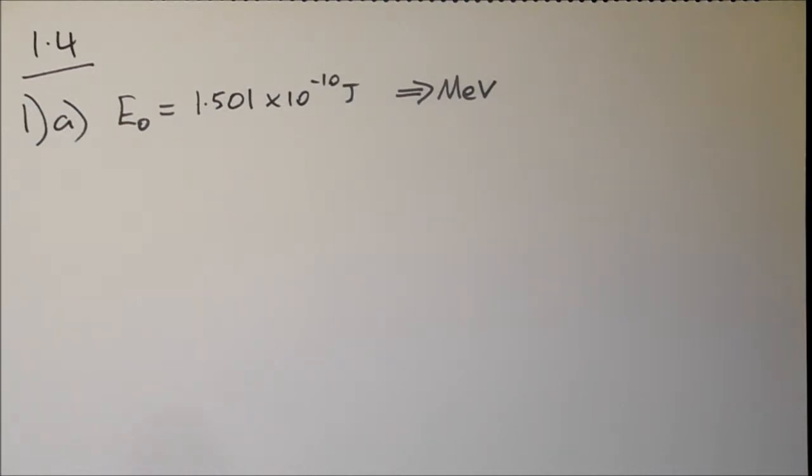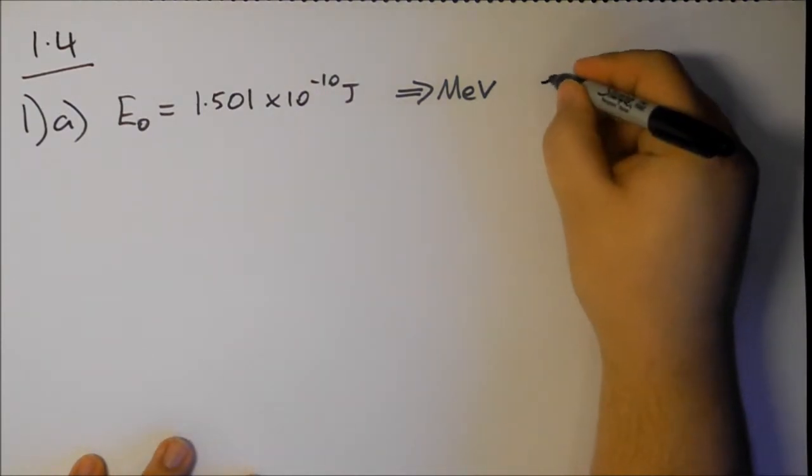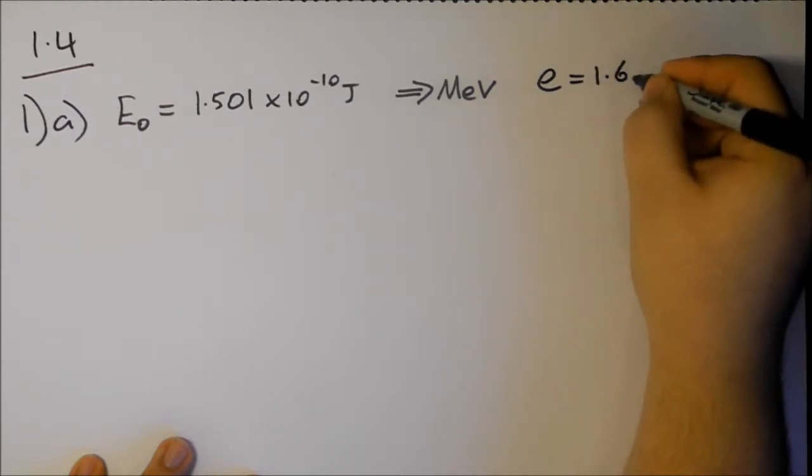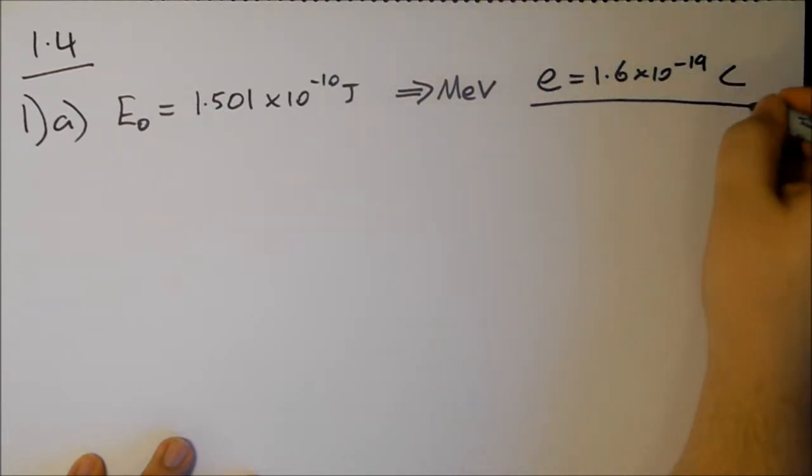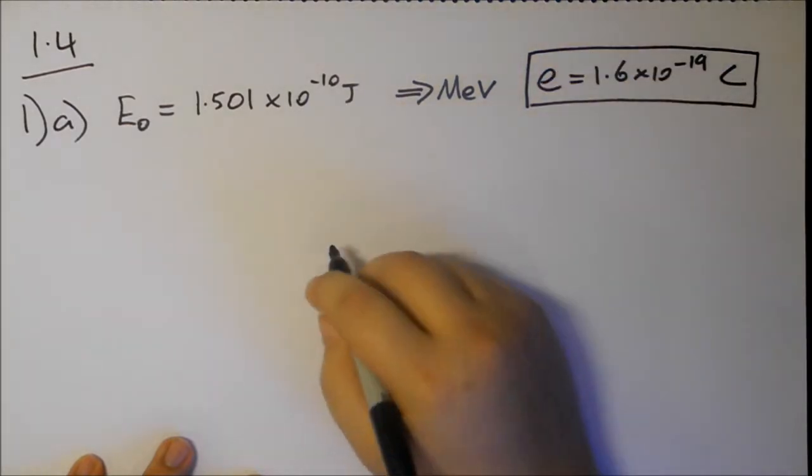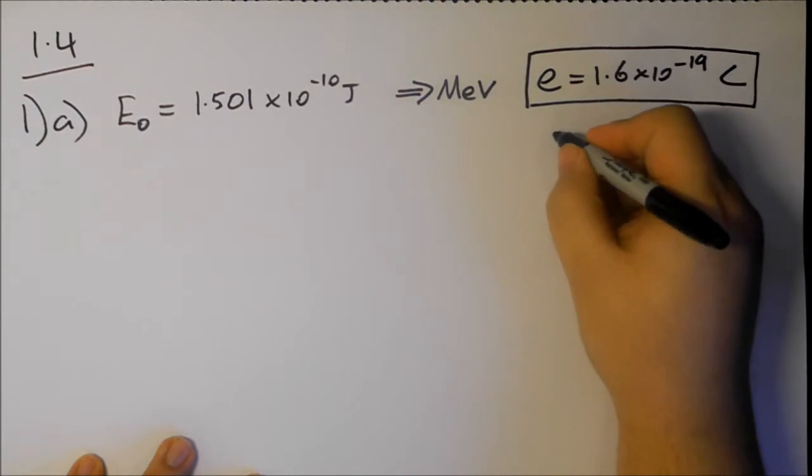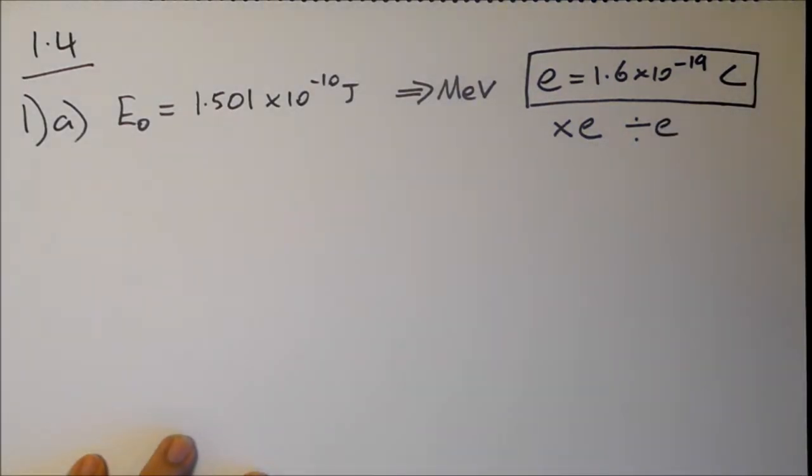When we convert from energy to electron volts, people get very confused by it, but it's totally unnecessary. You only ever do one of two things. If we know that the charge on electron is e, 1.6 times 10 to the minus 19 coulombs, then you either times e or divide by e, depending on which way we're going.